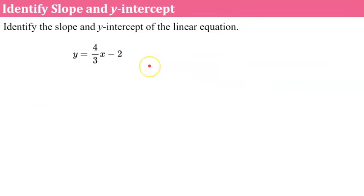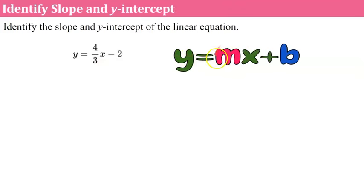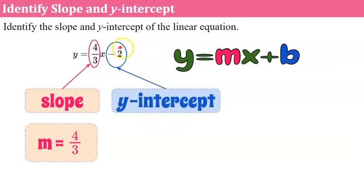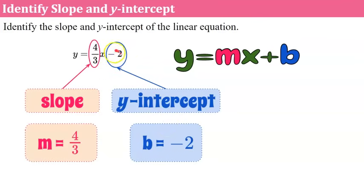Now let's identify slope and y-intercept from a given linear equation. We notice that it is solved for y, so we know it's in slope-intercept form. The coefficient of x is our m, or our slope — so our slope here is 4 thirds. What follows the x, including the sign, represents the y-intercept. Here the y-intercept is negative 2. Slope is a ratio of rise over run, and y-intercept is a constant representing the y-coordinate of the point where the line crosses the y-axis.